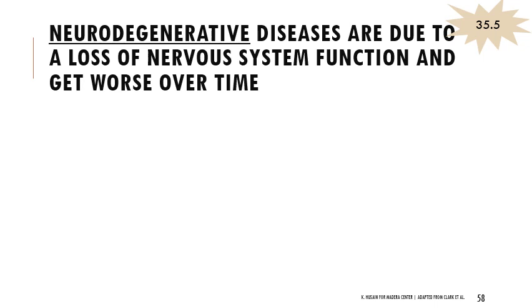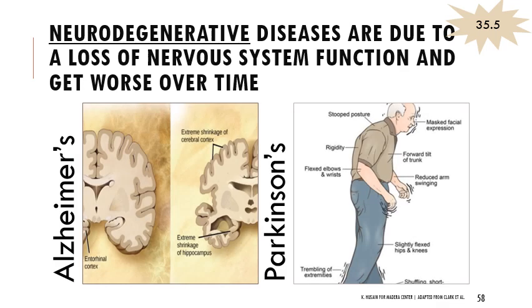Neurological problems include neurodegenerative disorders, which mean a loss of function - the system was at a healthy state and is being broken down over time. One example is Alzheimer's disease, a very common cause of dementia. Another is Parkinson's disease, which has a distinct set of symptoms involving tremors, shaking, and loss of function. Those are two familiar examples of neurodegenerative diseases.